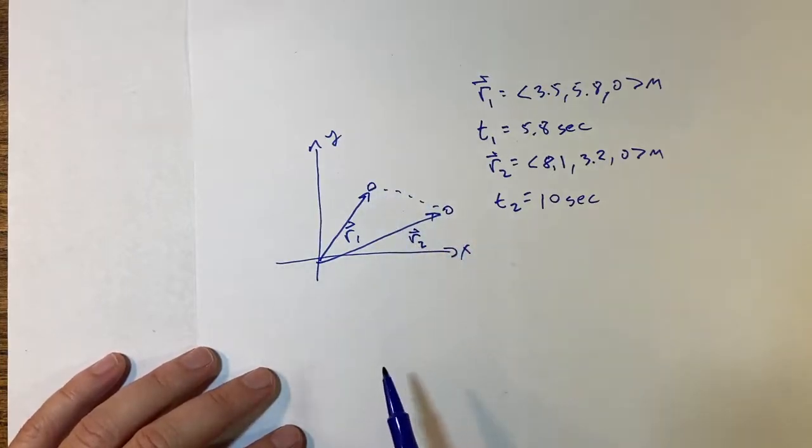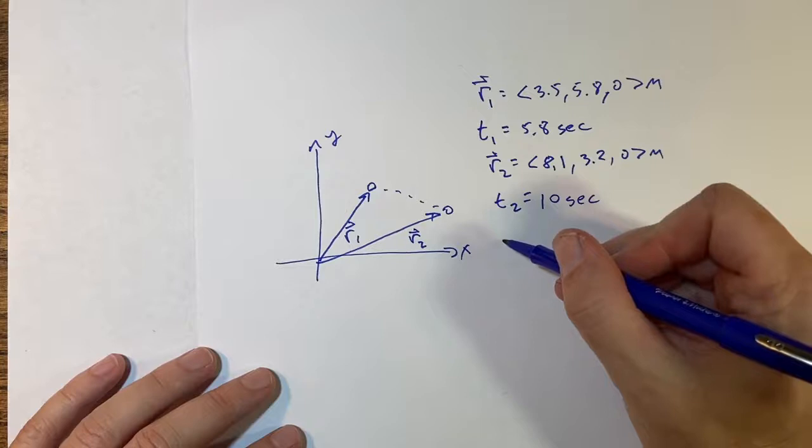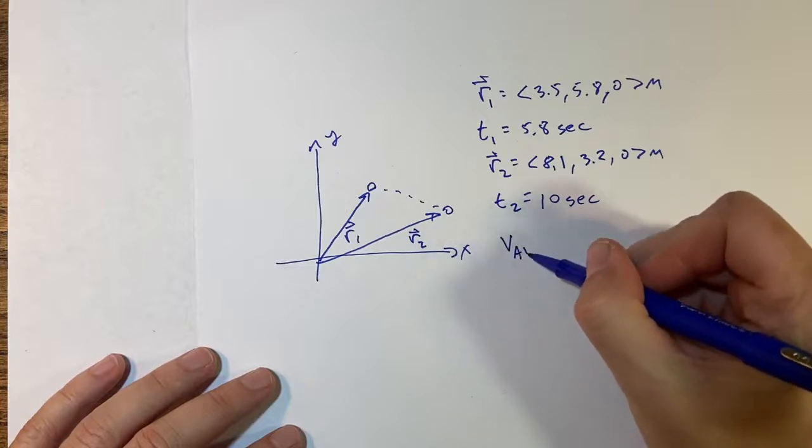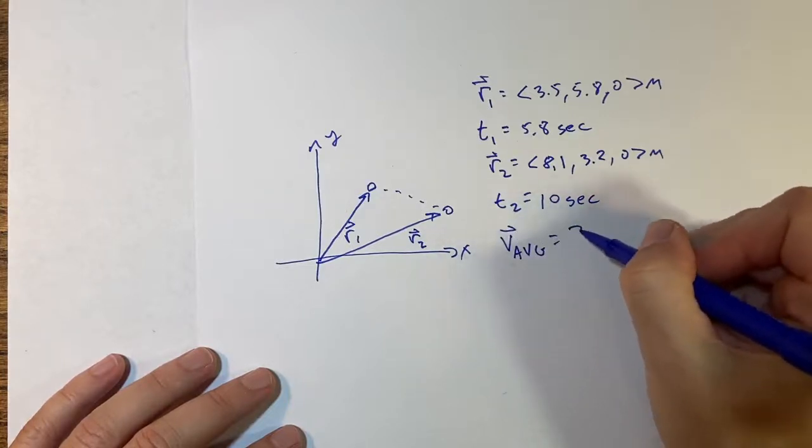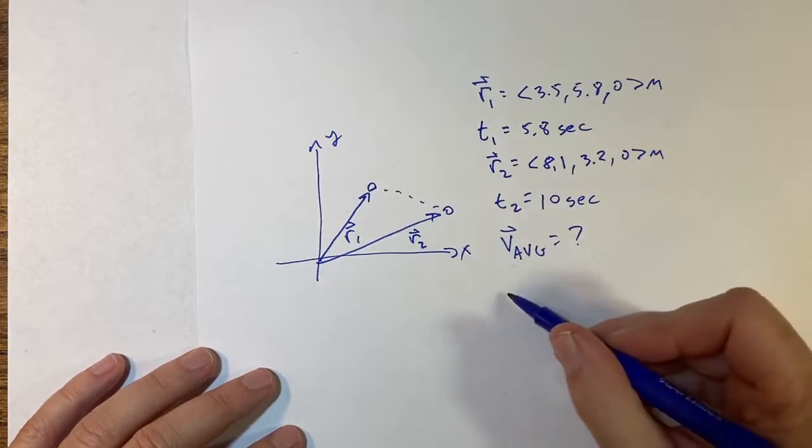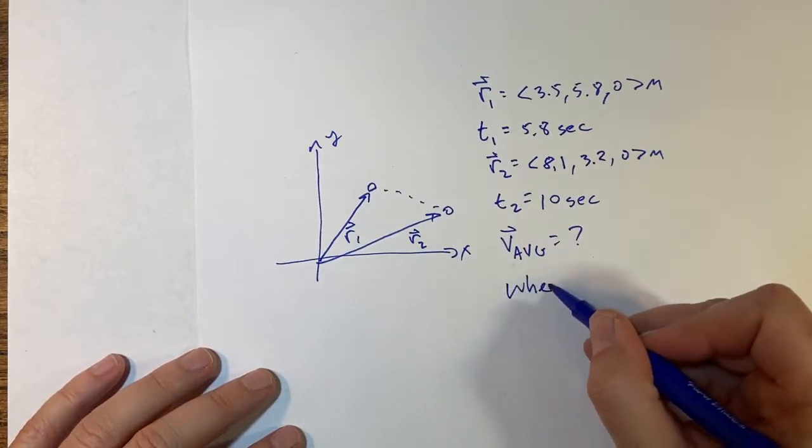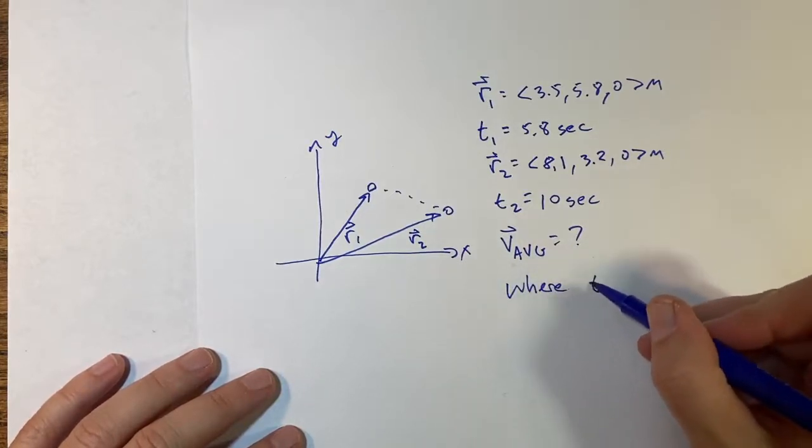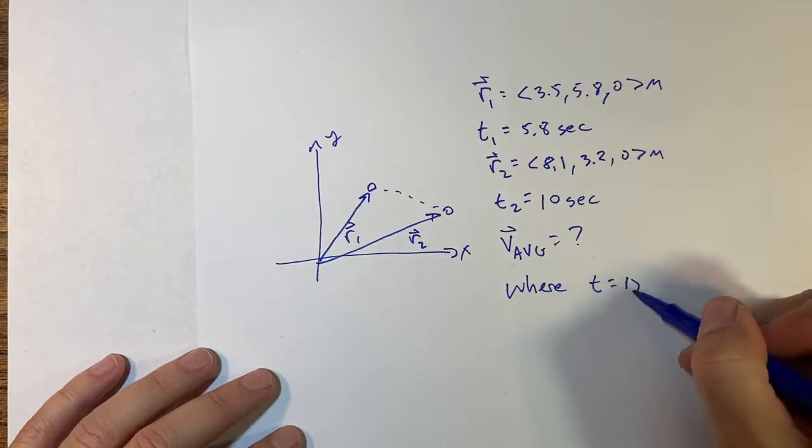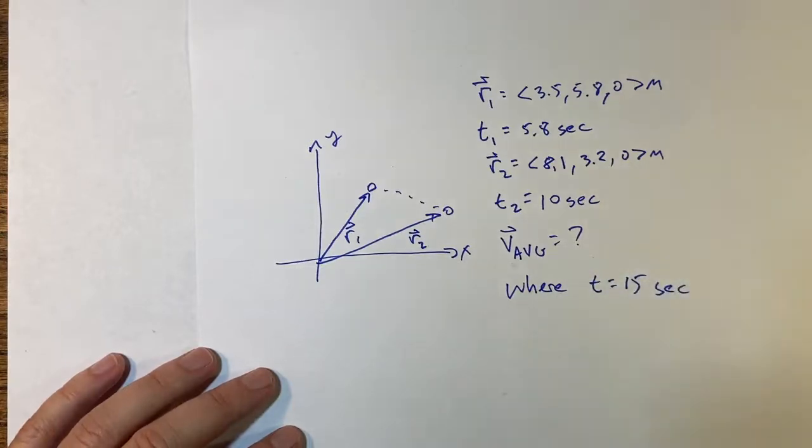And actually during this time the bird may not have gone straight, we don't know that, it could have gone anywhere, we don't really care. So two questions: one, what's the average velocity vector? Number two, where will the bird be at t equals 15 seconds if it has the same average velocity?